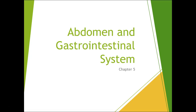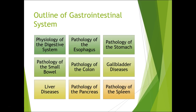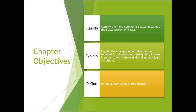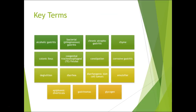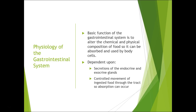This next lecture will be on the abdomen and gastrointestinal system — a long lecture, just over a hundred slides, but we'll go through it quickly. You have an outline of the GI system, things you need to know, and your objectives. Make sure you're able to define each one of these terms and some of their characteristics, including what they look like on imaging. The main goal is to look at an image and say 'that doesn't look normal.'